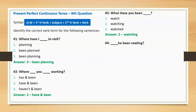Question four: 'What has he been reading?' Options: what has, what have, and what are. Correct answer: what has. Full sentence: 'What has he been reading?'